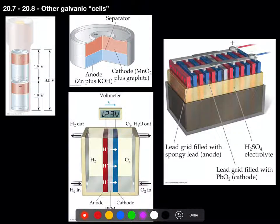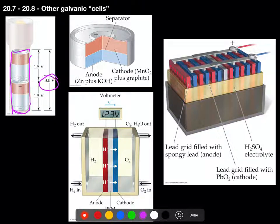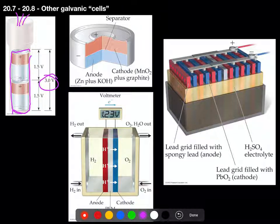So if we look here, we have a flashlight where we put our two batteries in series. We could get a combined voltage of three, and it powers our flashlight and gives us light.